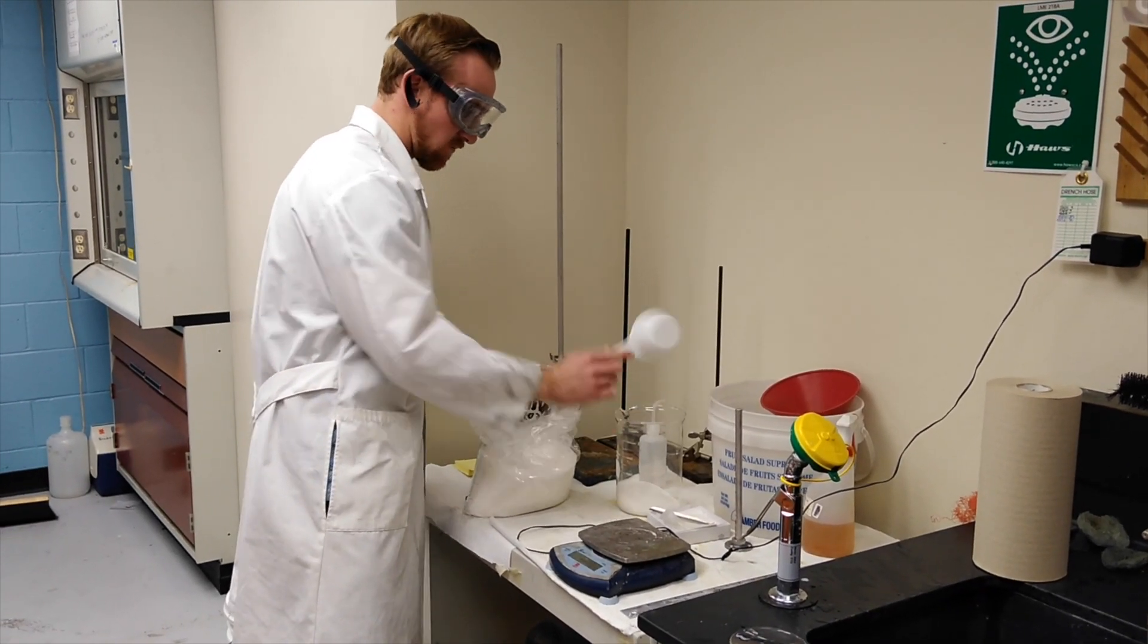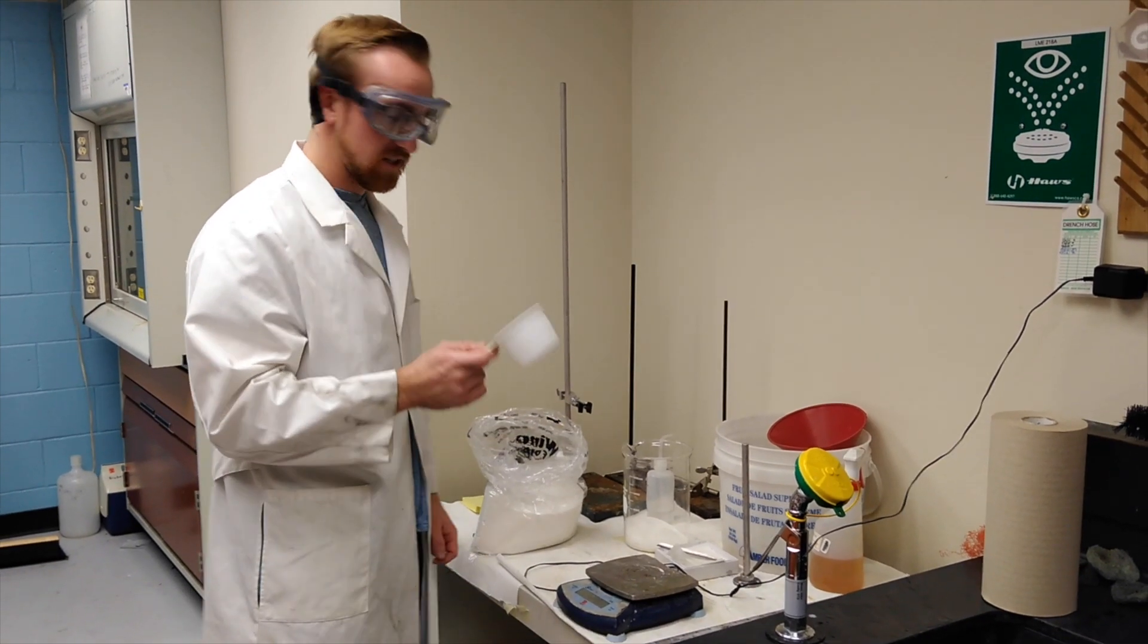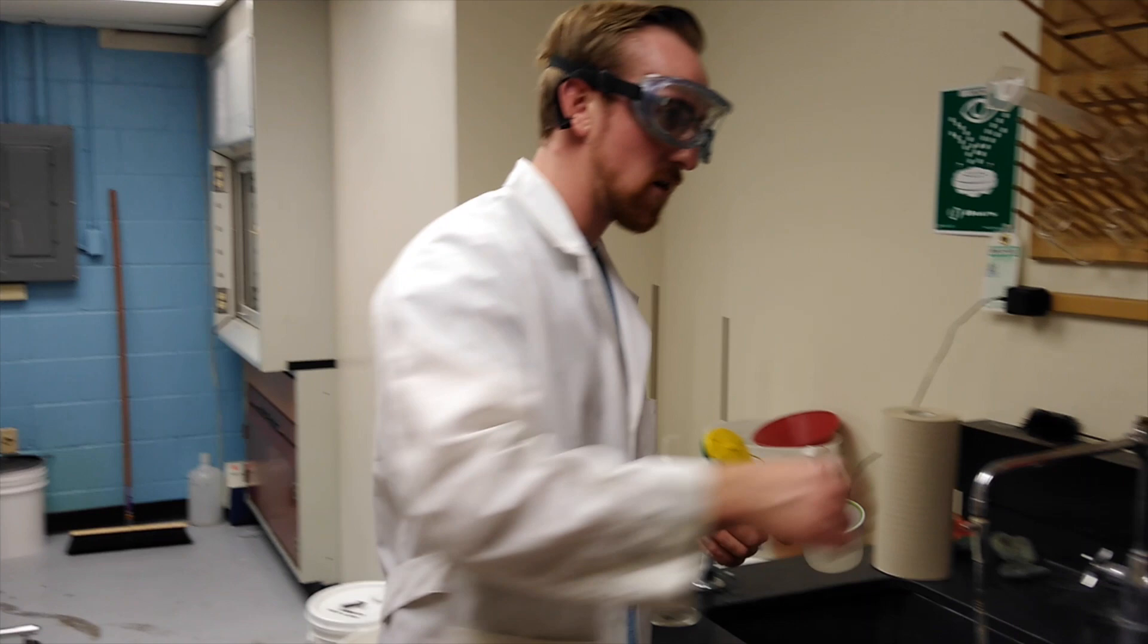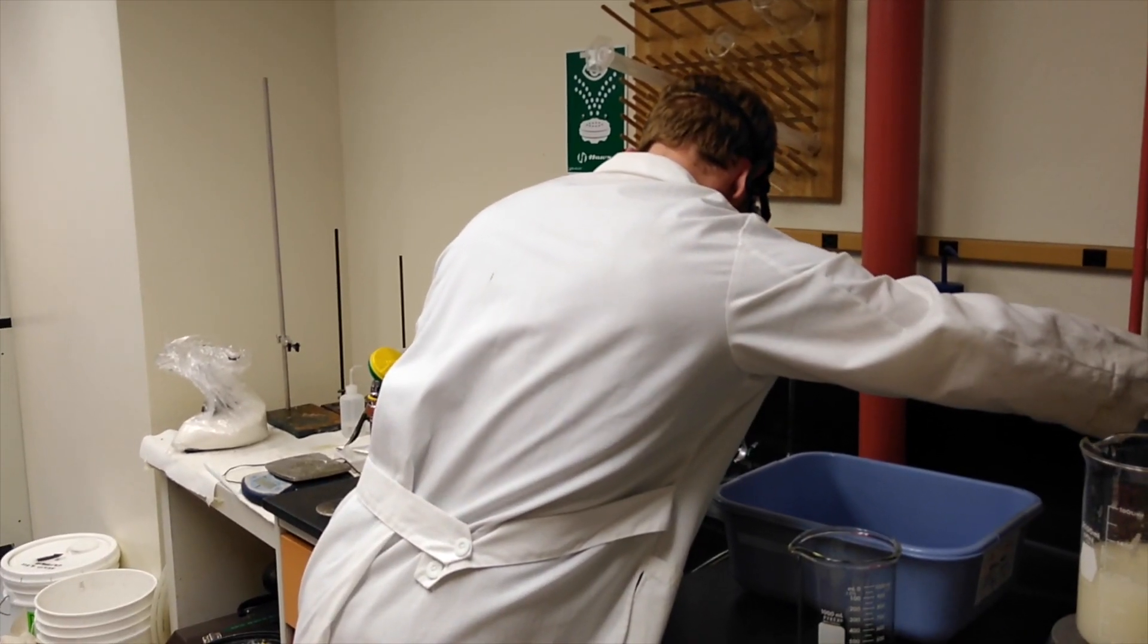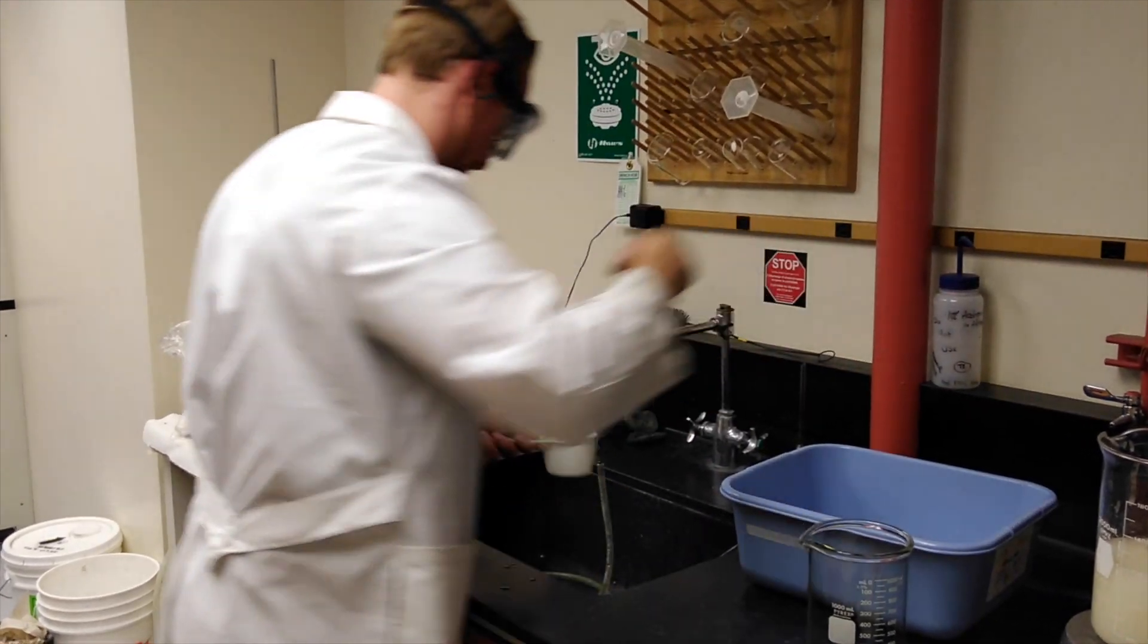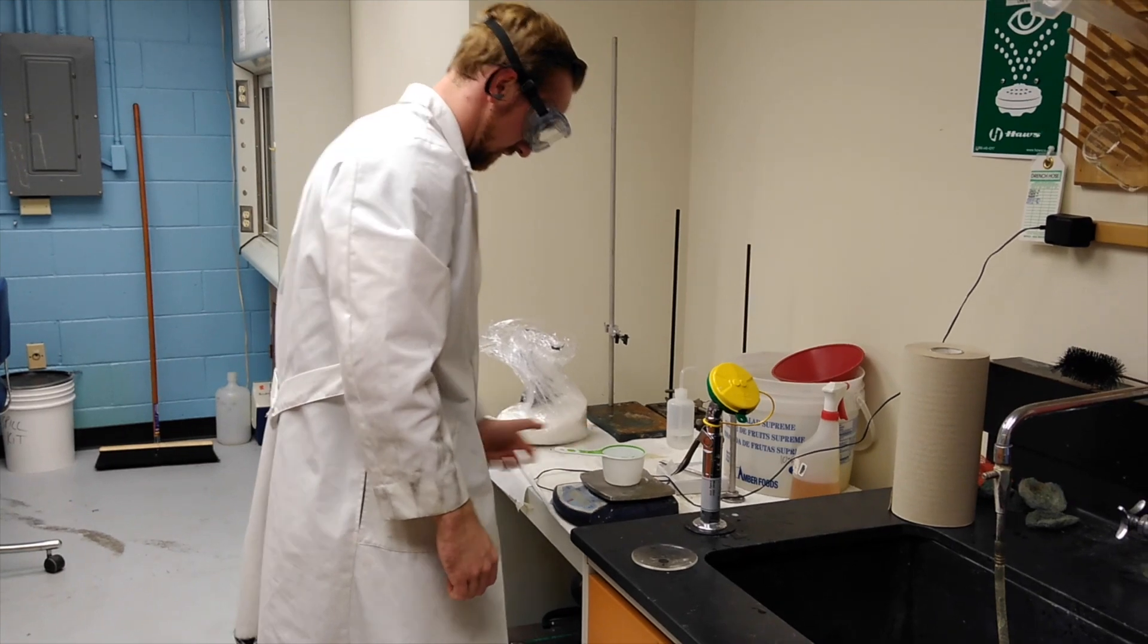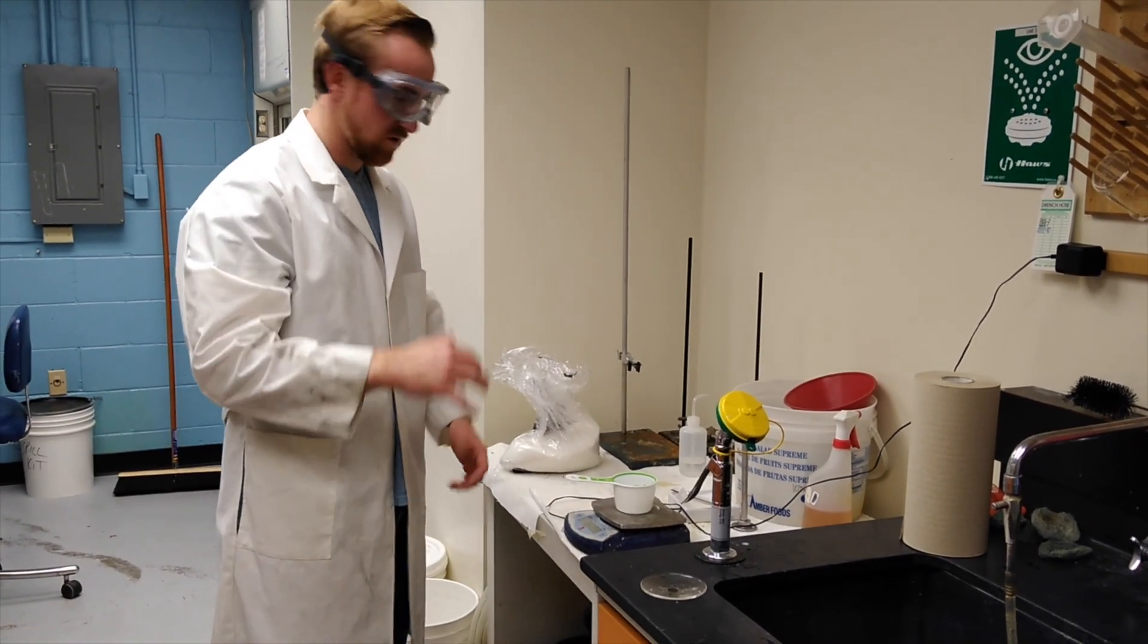For this experiment, we're going to be using five cups of sugar to one cup of water, and we're going to be using DI water. The next step we're going to do is, we're going to take one cup of DI water, and we'll also measure the mass. We will then use this in our sugar solution.